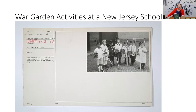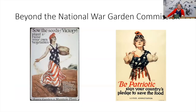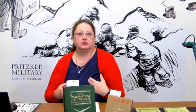This is from the National Archives — a photograph with information from war garden activities that occurred in a New Jersey school. As you can see, the students all have their equipment and are lined up for this photo. It was not just the National War Garden Commission; there were other groups involved in encouraging people to plant victory gardens, grow their own vegetables, conserve resources, and participate in food production for the country.